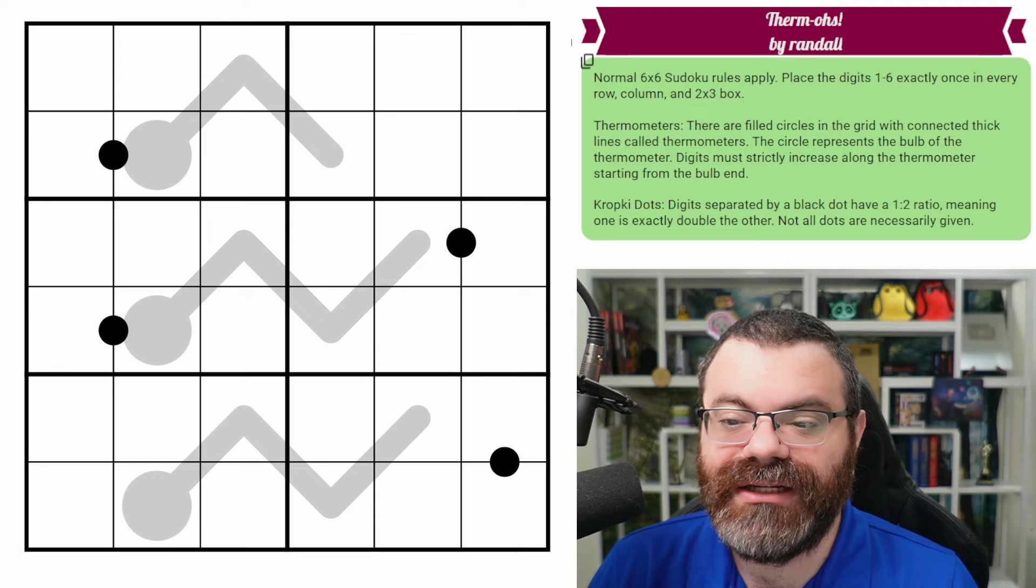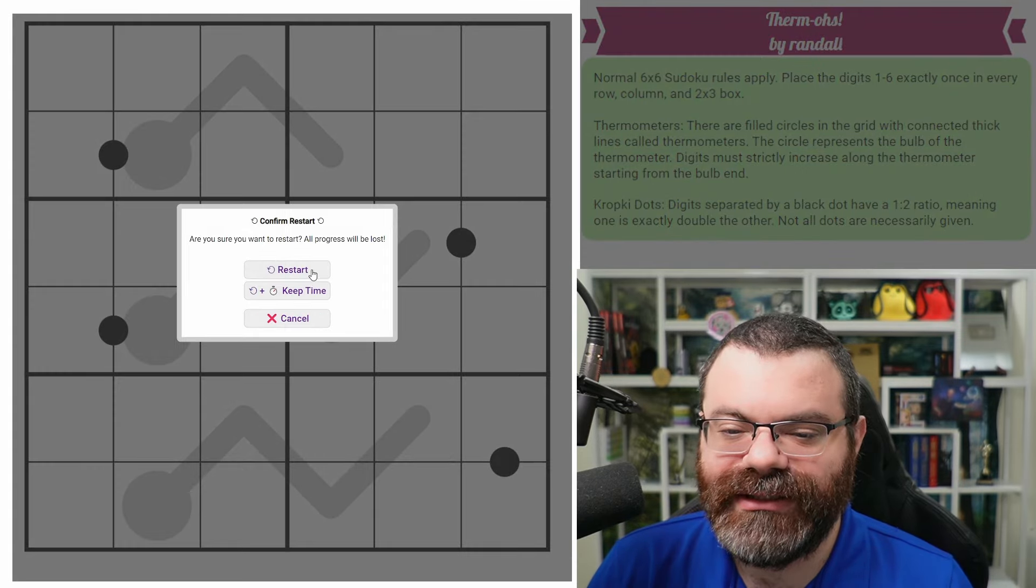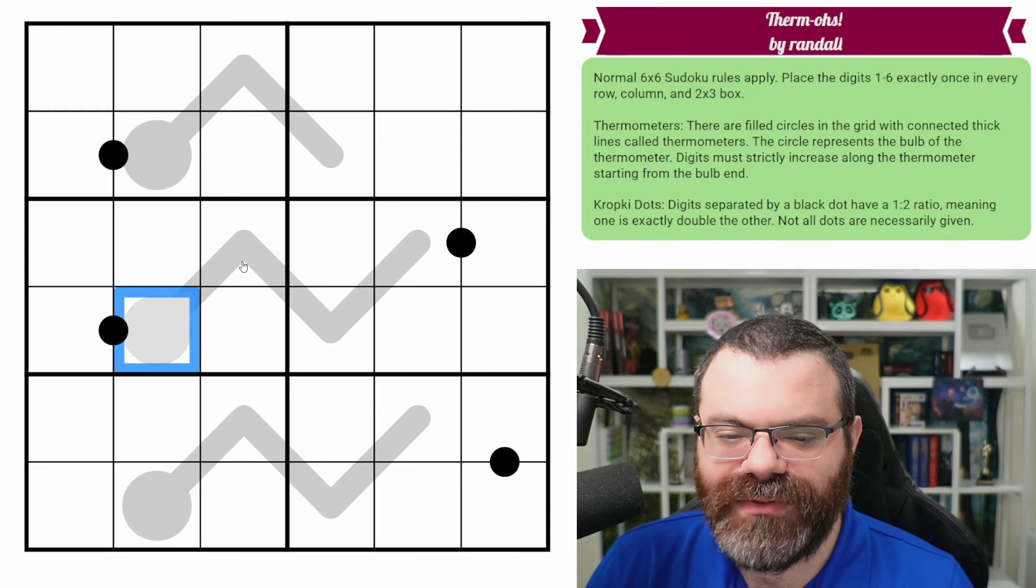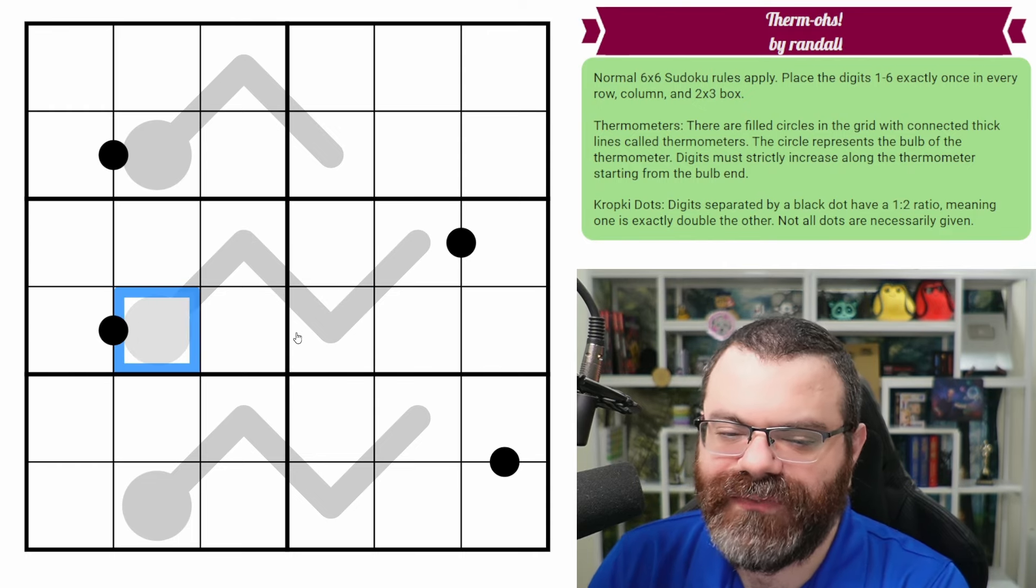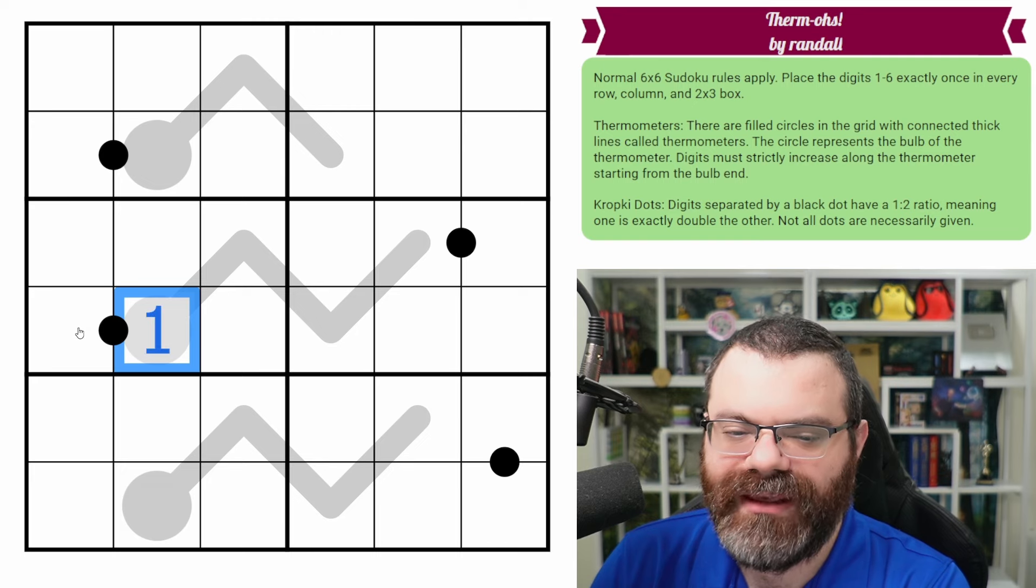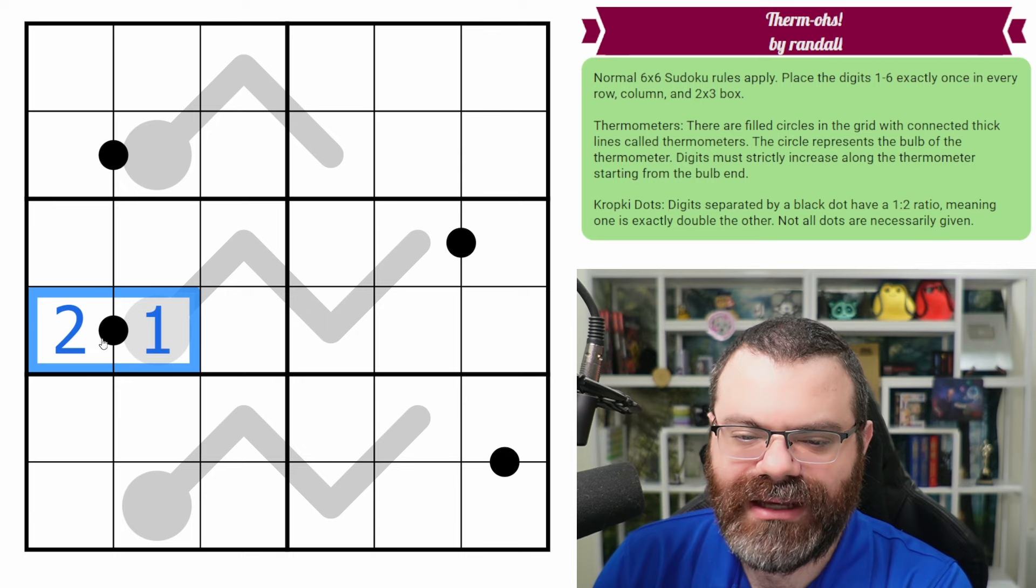And that's it. Those are the rules. There's a link in the description if you'd like to try the puzzle yourself. I'm going to get started right now. Let's start with these long ones, and especially this one here that's on a black dot. Because if you think about it, if we start this with a one, we're forced to put a two here, because two is the only digit we can put with a one on a black dot.